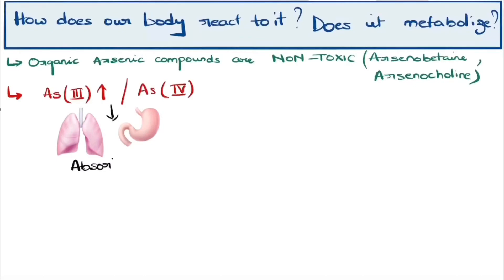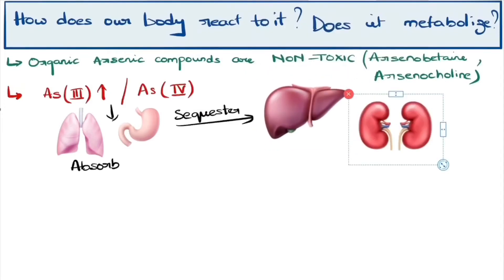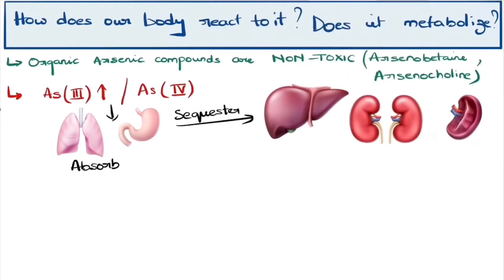Once entered, it gets sequestered in liver, spleen, kidney, and GI tract. The residue persists in the skin, hair, and nails. Detoxification is by biomethylation. This process gets saturated and further arsenic doesn't get metabolized.